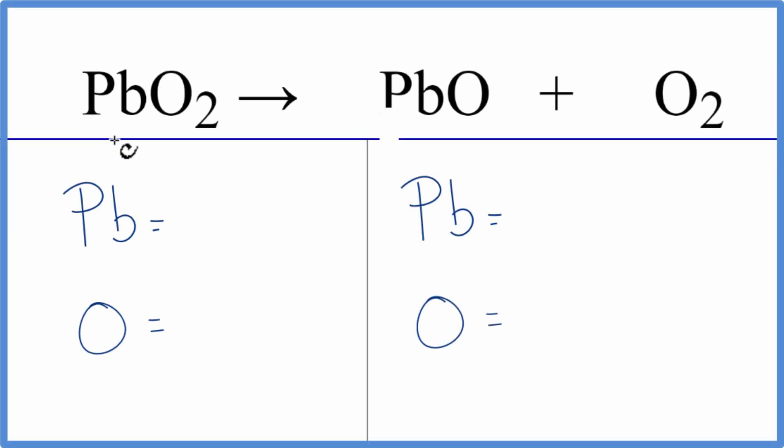To balance this equation we have lead dioxide and it's decomposing. It's breaking apart into lead oxide and then this oxygen gas here. So let's count the atoms up and balance the equation.